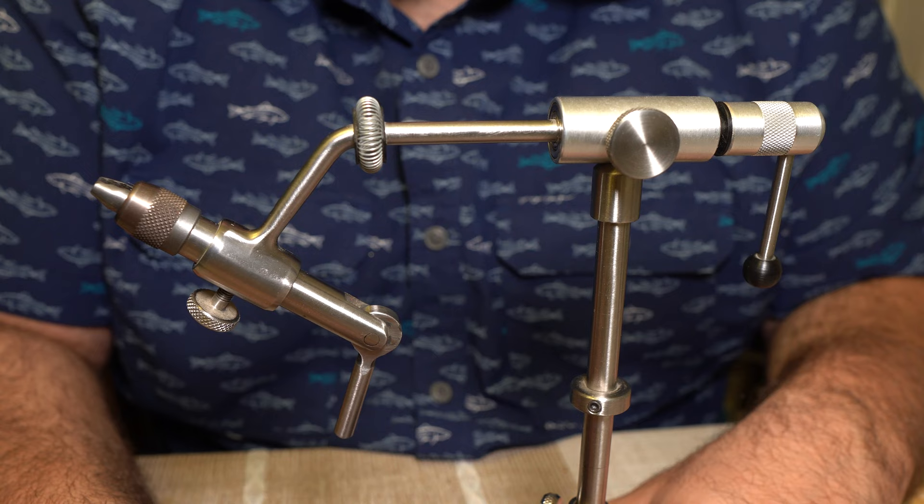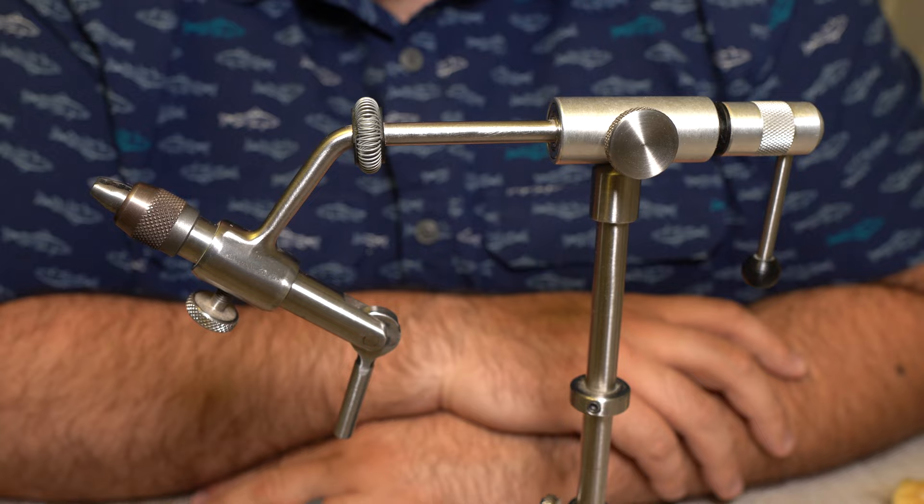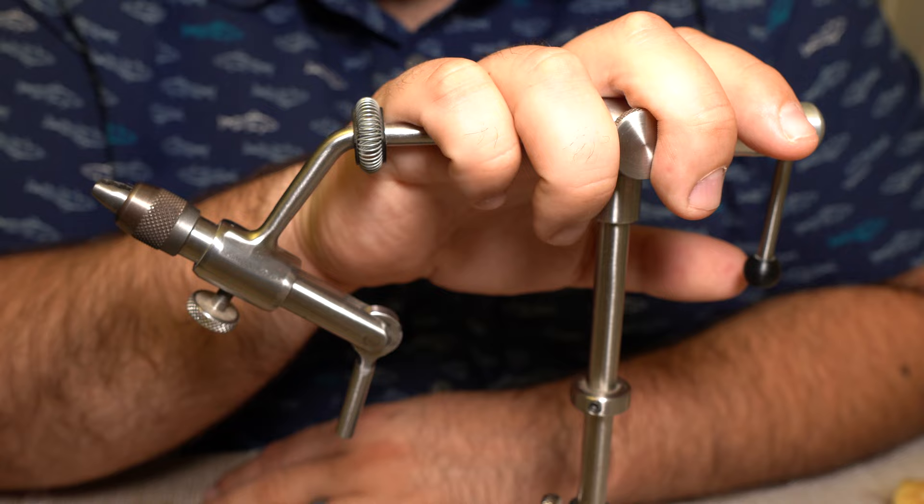They're great vises. They hold hooks. They're stupid easy to use. The one thing I love about them is there's no fiddling with the forcing cone. It's boom, squeeze, hook in, you're done. That's all you got to do. And I think that's awesome. And I wish there was something in a true rotary vise that could mimic that.